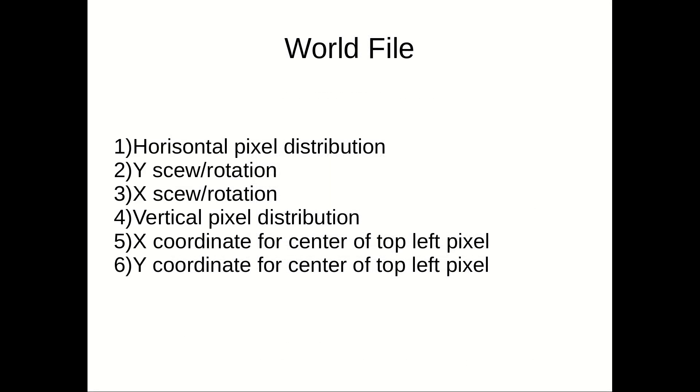In the file, which is just a text file, there are six rows. The last two rows describe the coordinates in X and Y for the center of the top left raster pixel.